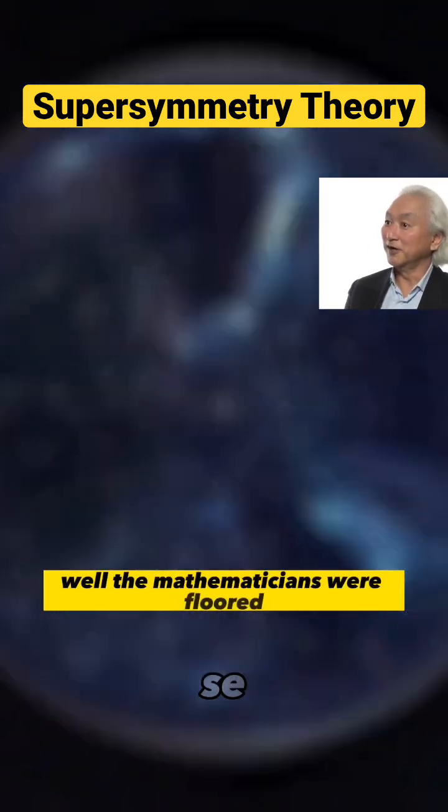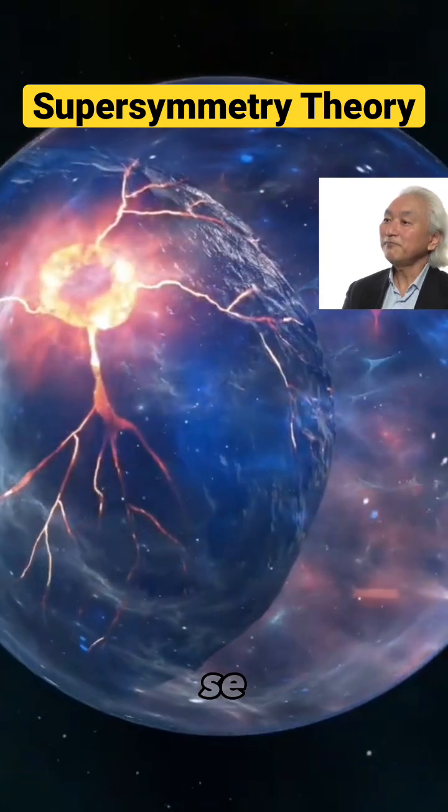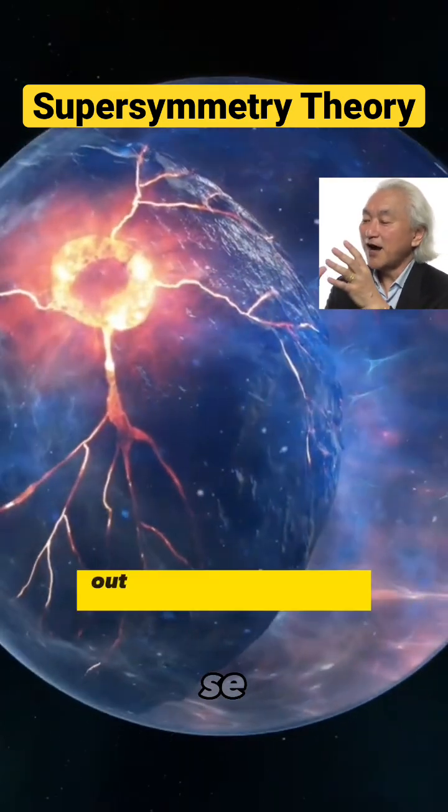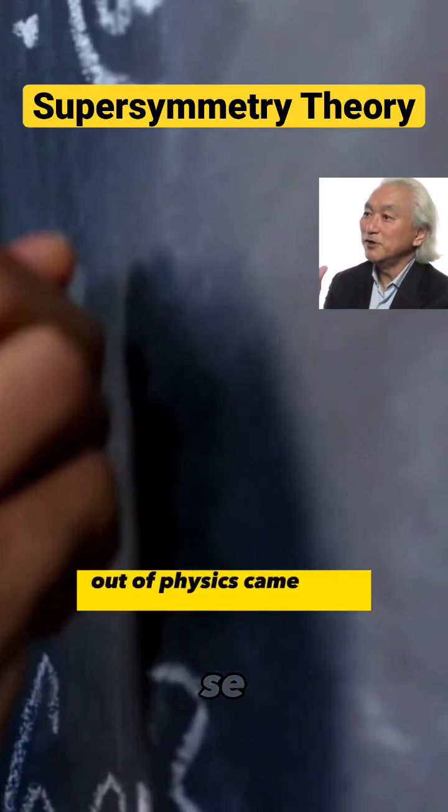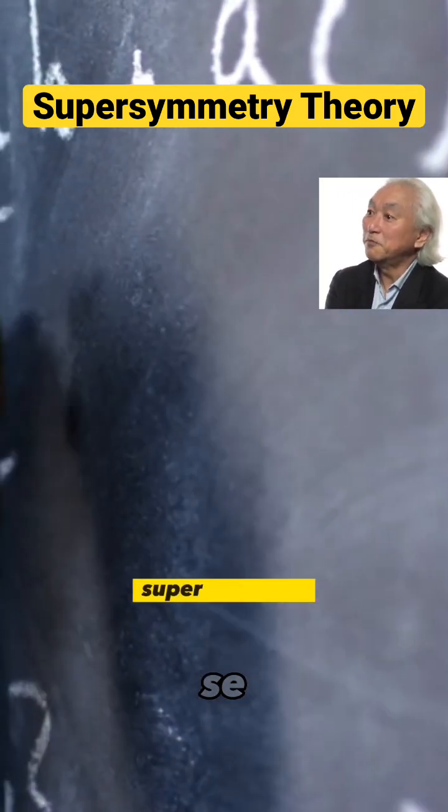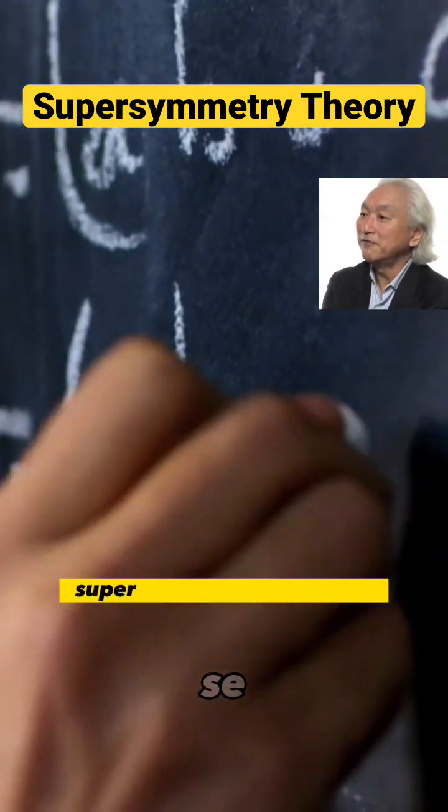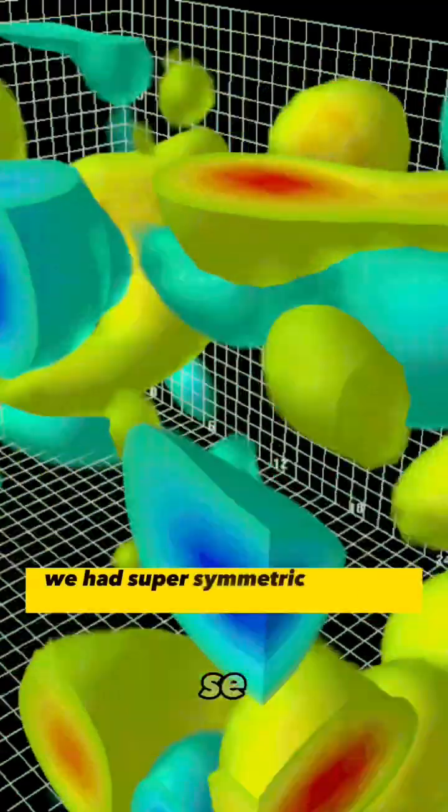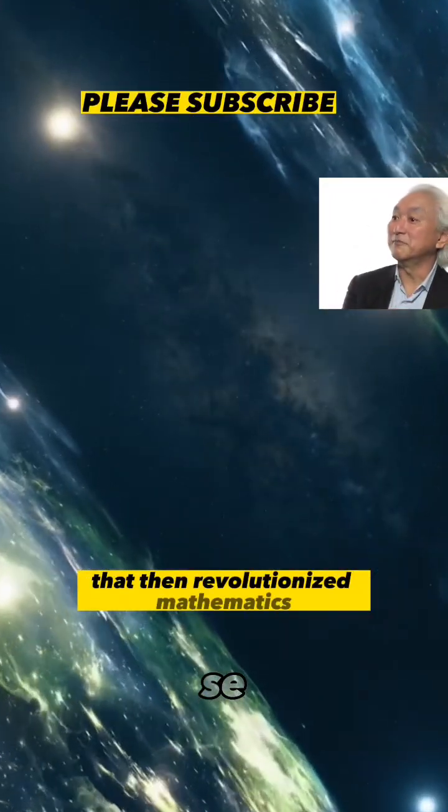The mathematicians were floored. They were shocked. Because all of a sudden, out of physics came new mathematics: super numbers, super topology, super differential geometry. We had supersymmetric theories coming out of physics that then revolutionized mathematics.